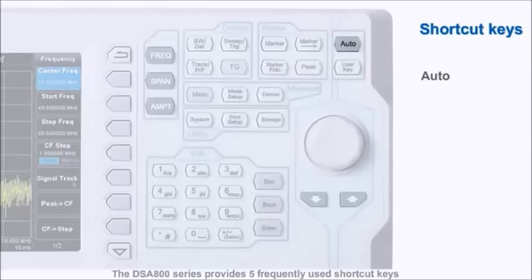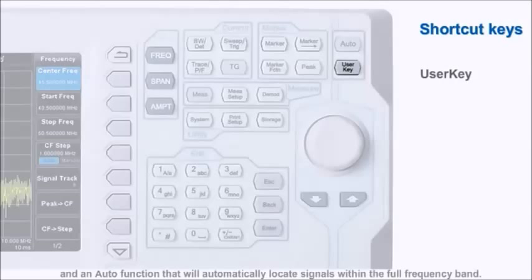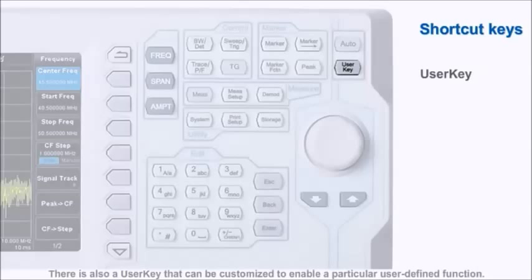The DSA800 series provides five frequently used shortcut keys and an auto function that will automatically locate signals within the full frequency band. There is also a user key that can be customized to enable a particular user-defined function.